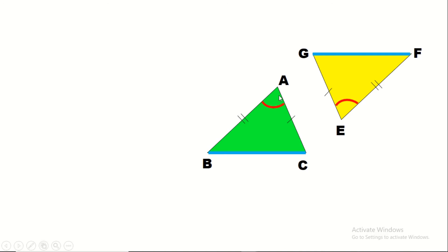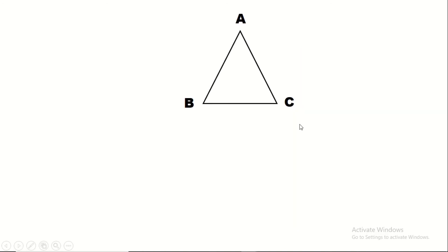For the SAS case, the angle ACB-salant, formed between the two given sides, equals angle EGF-salant as a homologous angle. Also, since GF equals BC and AC equals EG, the angles formed between them are equal. Therefore angle ACB-salant equals angle EGF-salant as homologous angles.